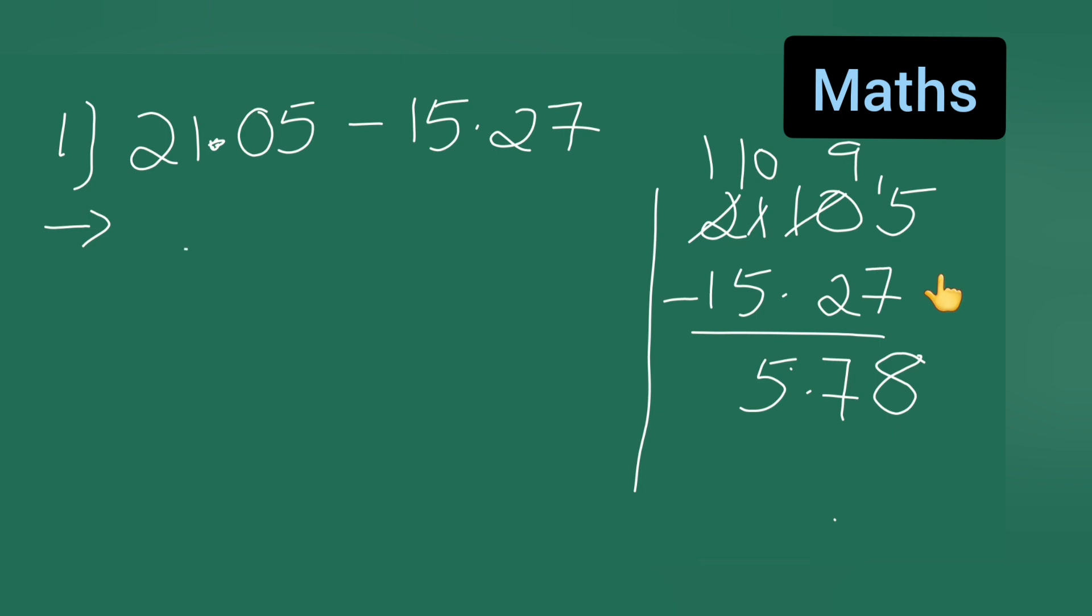21.05 minus 15.27, and your answer will be 5.78. So I hope you'll have understood and thanks for watching.